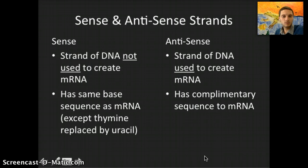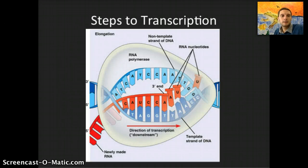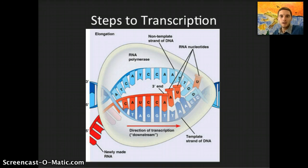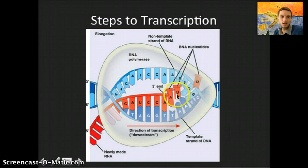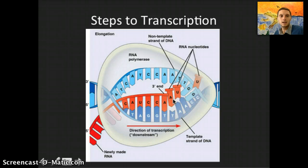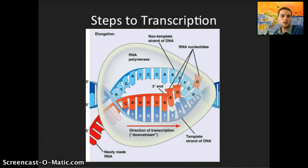The first thing that has to happen in transcription is the double helix needs to be split apart, just like in DNA replication. RNA polymerase is the enzyme that does this — it binds to a promoter on the antisense strand, which acts as a starting factor. RNA polymerase uncoils the DNA, and then as it moves along, free nucleoside triphosphates bond to the complementary base pairs on the antisense strand. Those nucleoside triphosphates release two phosphates to provide the energy needed to form those bonds.